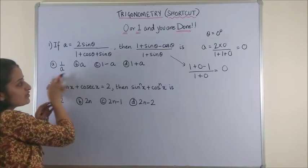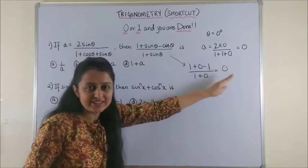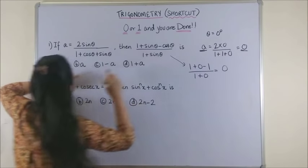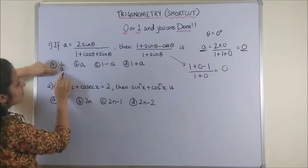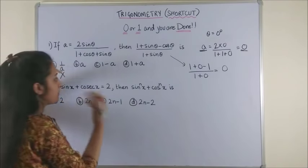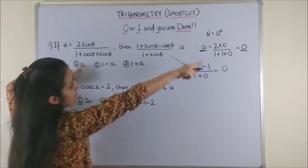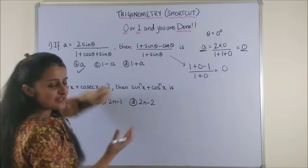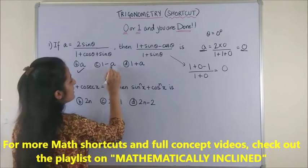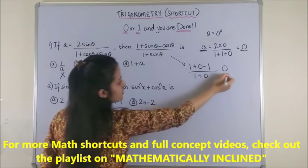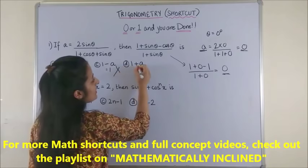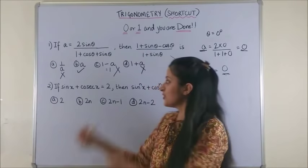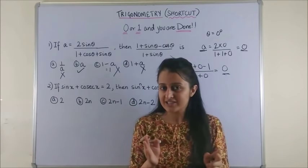I need to see which of these options give me a straight 0 when I put my value of A to be 0. So, if you see 1 upon 0 cannot be the answer. It will become not defined. A is 0 and this expression is also 0. So, this goes just for a check. 1 minus 0 gives us 1 which is not the answer. 1 plus 0 again gives us 1 which is not the answer. So, the option was option B. Wasn't that easy?